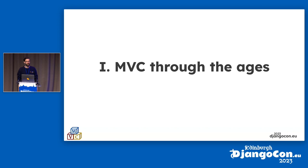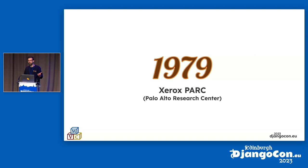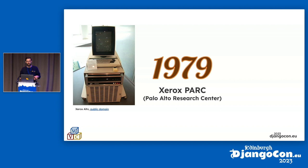A little bit of history. We're in the year 1979. What is going on in the 70s in terms of computers and technology? One place that is innovating a lot in the 70s is Xerox PARC — a research center in Palo Alto, California. Lots of stuff is happening there. For example, they're developing the Xerox Alto, which is a computer — kind of a PC before there were PCs — pioneering a lot of technology that we would recognize today.